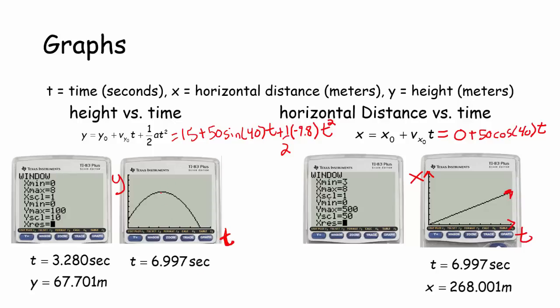Notice this graph is not the path of the potato — it's just the height of the potato at any given time. At time zero, the potato is 15 meters off the ground. At 3.28 seconds, the potato is at its maximum height of 67.701 meters off the ground. And at 6.997 seconds, the potato is 0 meters off the ground — that's when the potato hits the ground.